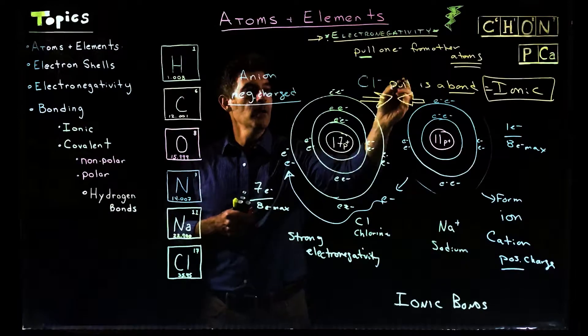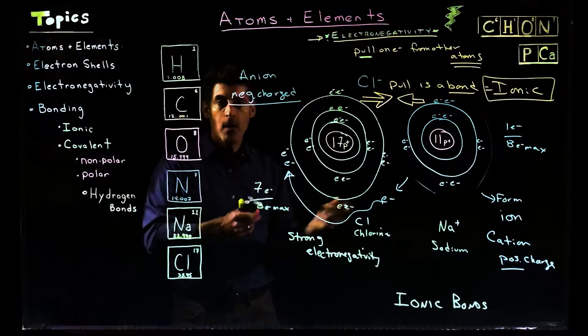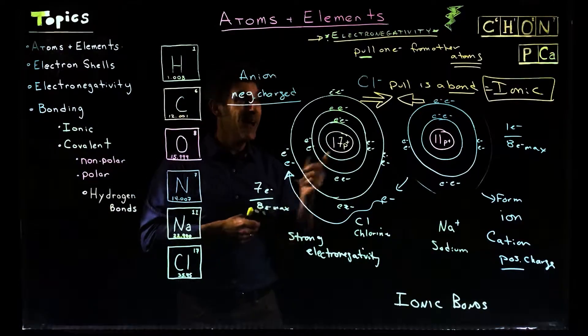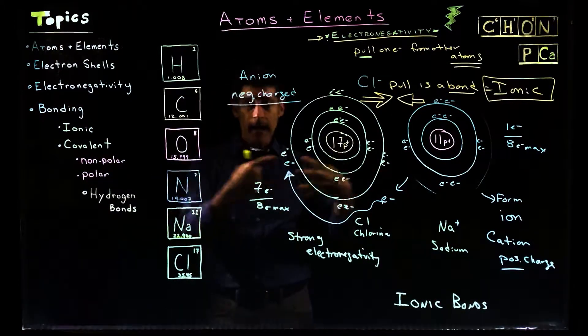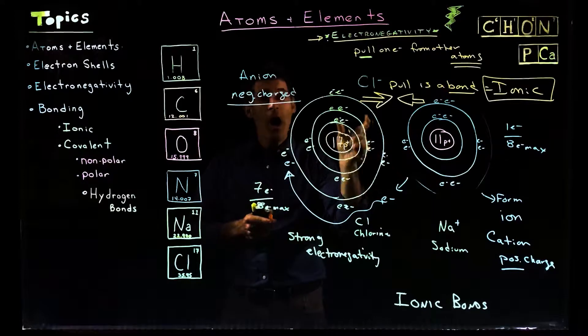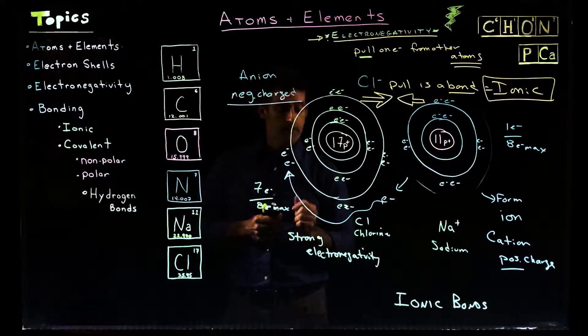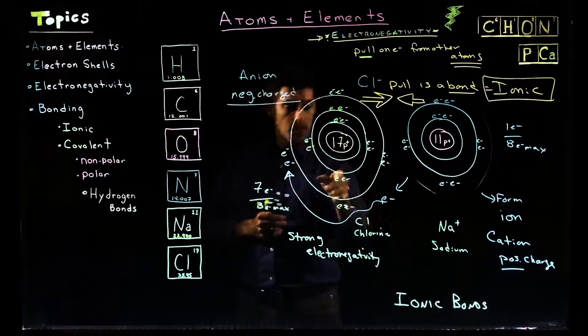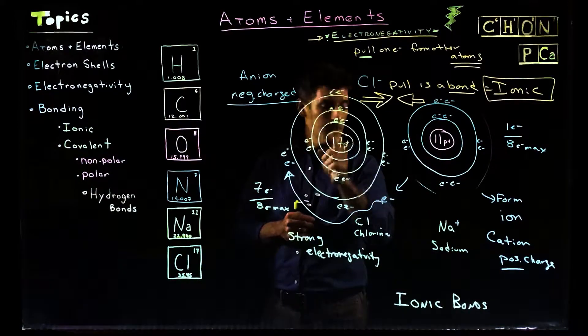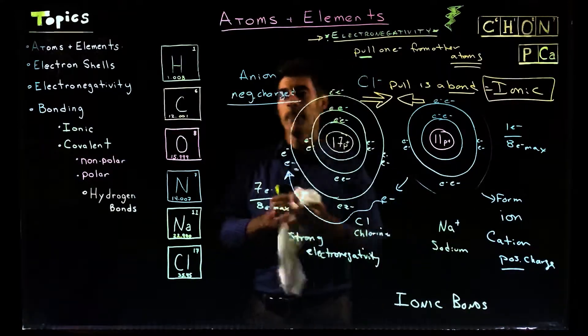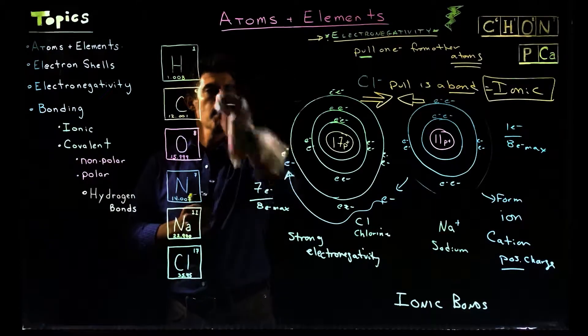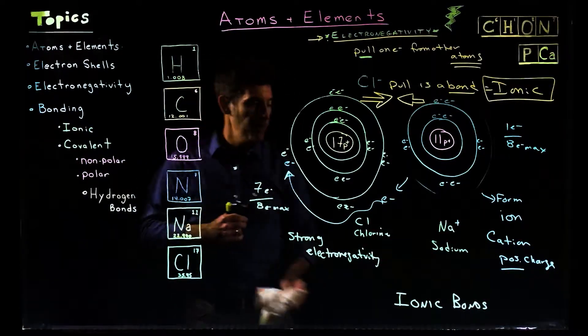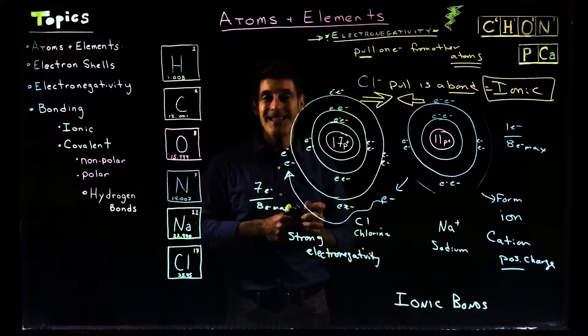So what we're going to see then is a pull. So this particular ion is going to pull toward this one and vice versa. The pull between these two is going to be what we call an ionic bond. So an ionic bond is going to be defined as the attraction between two opposite charged ions. So this one's positive over here, sodium. This one's negative over here. And that pull between the two, that is the ionic bond.